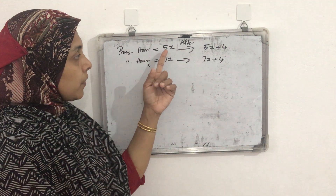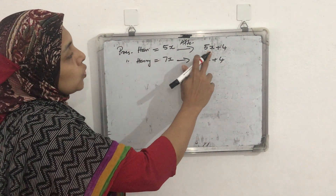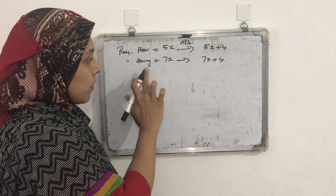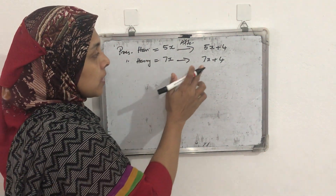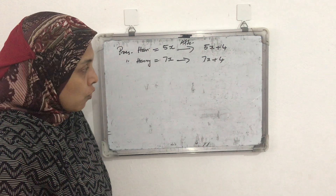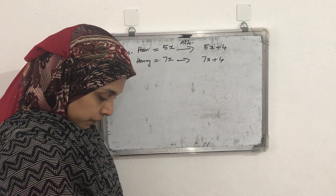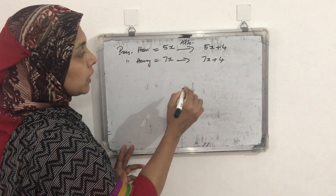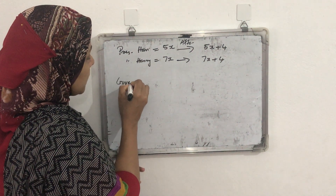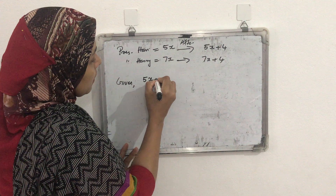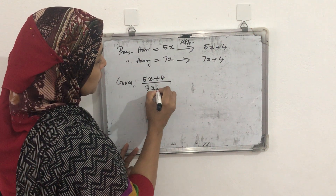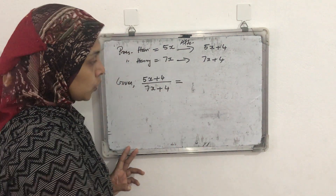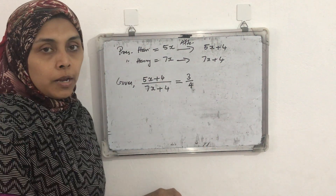If their present age is 5x, after 4 years Hari's age will become 5x plus 4. Present age of the second Hari is 7x, then after 4 years his age becomes 7x plus 4. Four years from now the ratio of their ages will be 3 is to 4 — that is given. So the ratio of their ages is 3 is to 4.